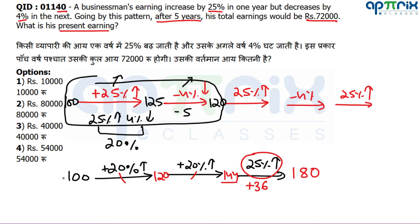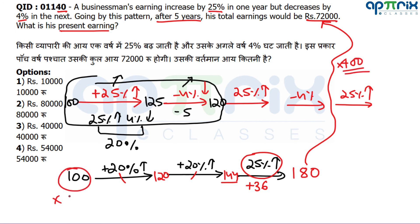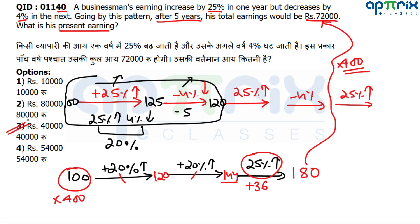Final value is 72,000. If our multiplier is 1.8 (i.e., 180 parts = 72,000), then 1 part = 400, and 100 parts = 40,000. So his present earning is rupees 40,000. Thank you all for watching this video lesson.